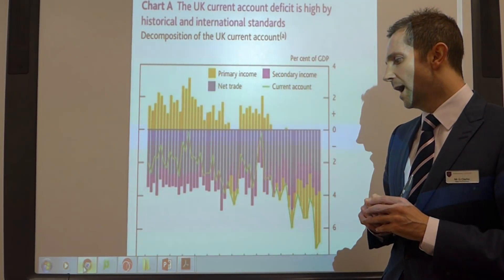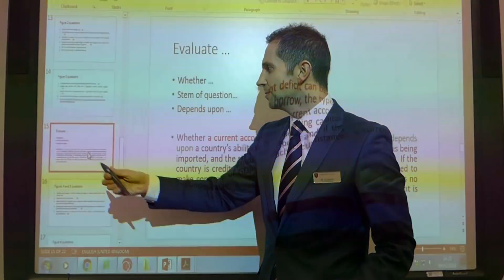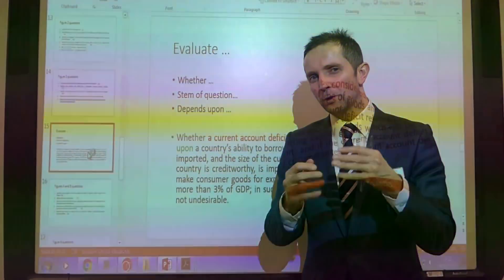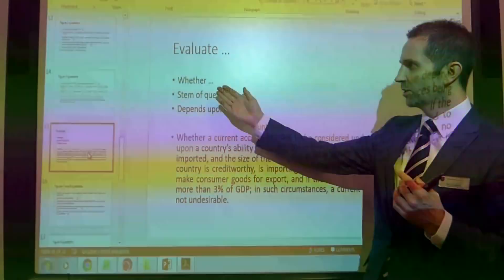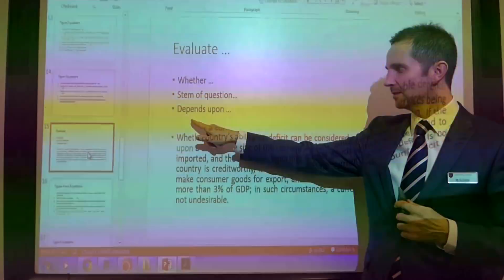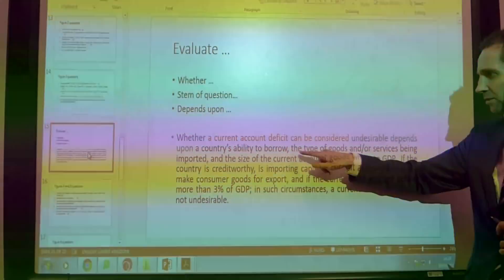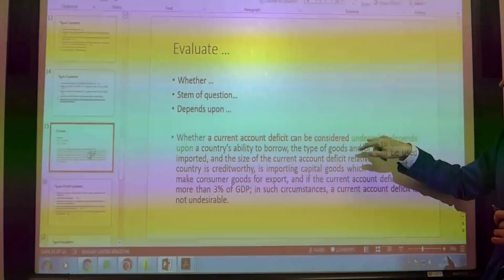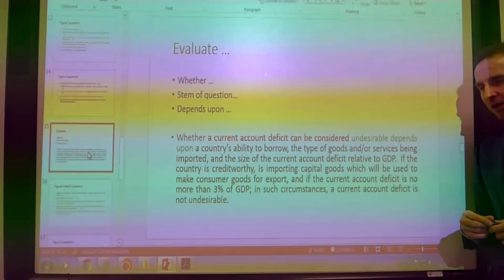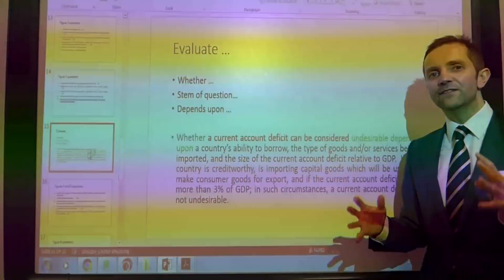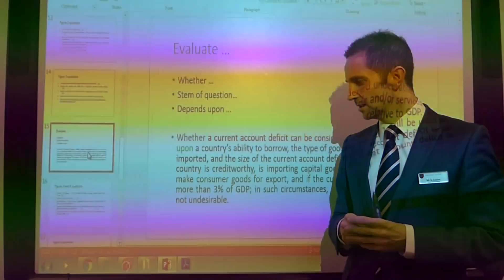I just want to talk briefly about the way you could close off a question like this. This is the way A-level mark schemes are going. You want to start with the word 'whether', then use the stem of the question, then say 'depends upon'. So for example: 'Whether a current account deficit can be considered undesirable depends upon...' and then add your conditions. I think that's a great structure to evaluate a question like this.